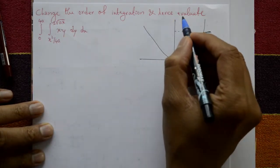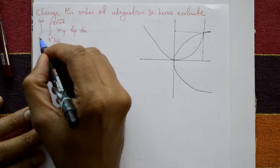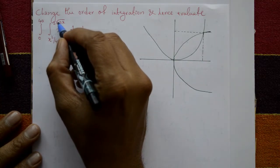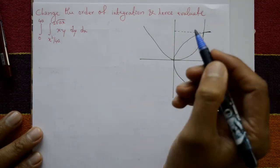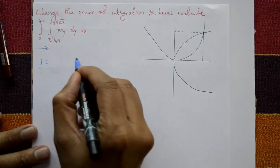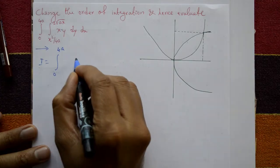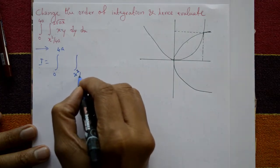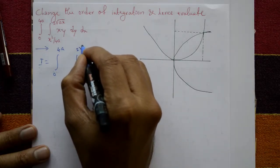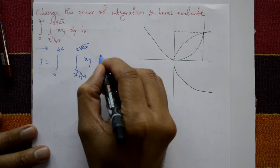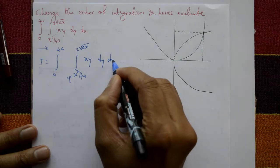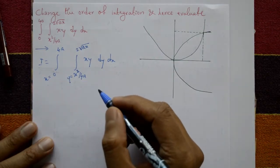Change the order of integration and hence evaluate: I is equal to integration of 0 to 4a, integration of x squared by 4a to 2 times square root of ax, of xy dy dx. The first integration is with respect to y, and the second is with respect to x.